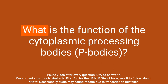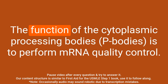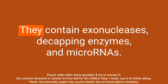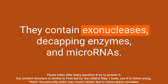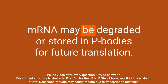Question: What is the function of the cytoplasmic processing bodies? Answer: The function of the cytoplasmic processing bodies is to perform mRNA quality control. They contain exonucleases, decapping enzymes, and microRNAs. mRNA may be degraded or stored in P bodies for future translation.